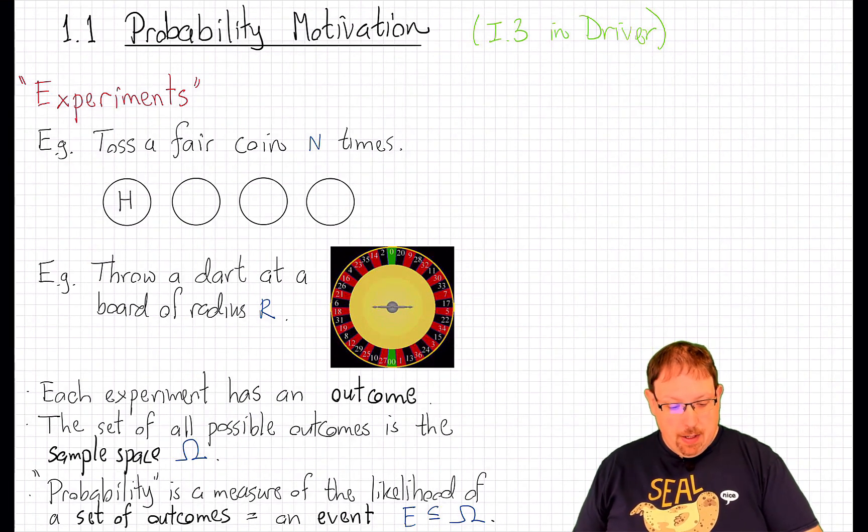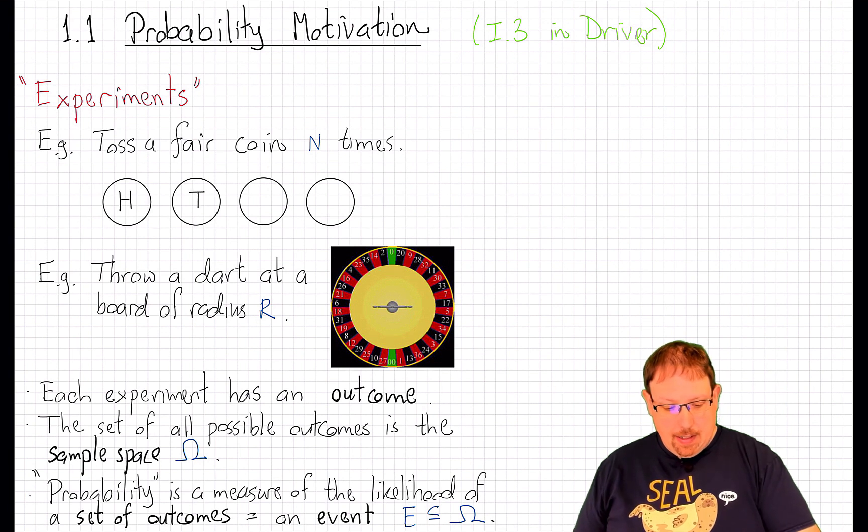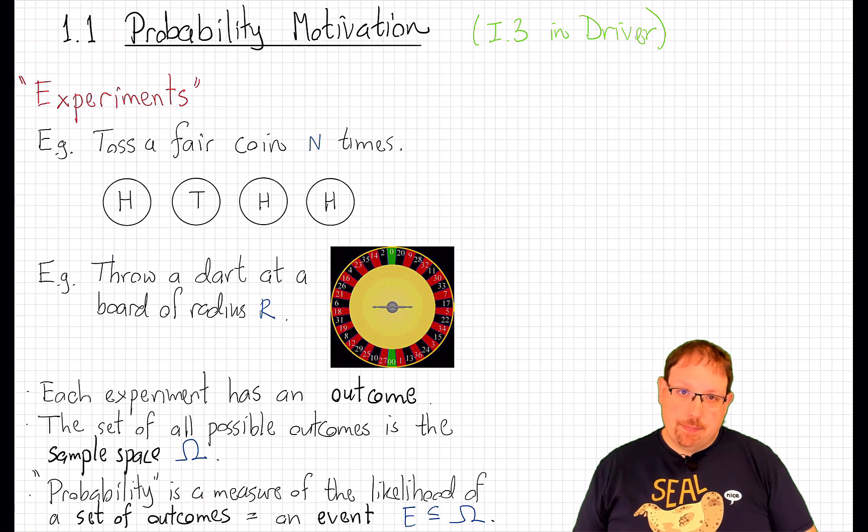Here's one of them. I might get heads, tails, heads, heads. That's one outcome. But I might be interested not in just a single outcome, but in a collection of outcomes described in a nice way.